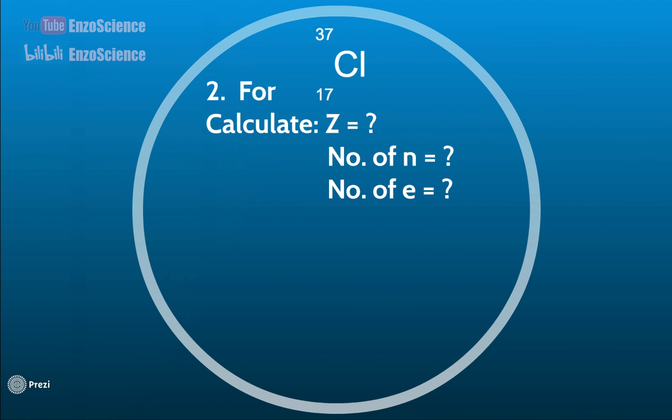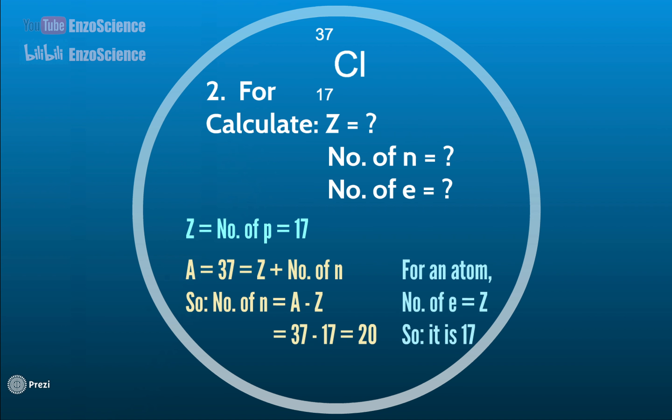Next, for chlorine-37, can you find out capital Z, number of neutrons and number of electrons? Well, this symbol tells us capital Z equals 17, and capital A is 37, which means capital Z plus number of neutrons. Then number of neutrons is 20. For an atom, number of electrons equals number of protons, so it is 17.